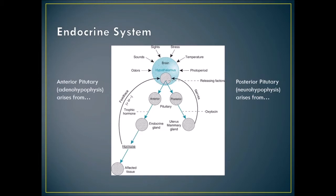The anterior pituitary, the adenohypophysis, arises from adenocells — fetal stem cells — whereas the posterior pituitary arises from nerve cells, the neurohypophysis. What controls the pituitary is the hypothalamus. The posterior pituitary affects the uterus and mammary gland through oxytocin, and also contains ADH which affects the kidneys. The anterior pituitary affects many other endocrine glands.